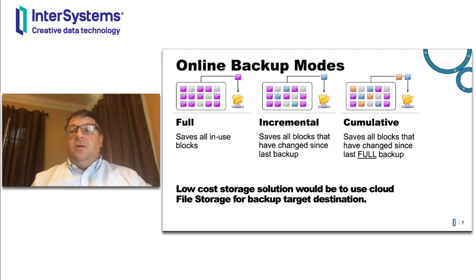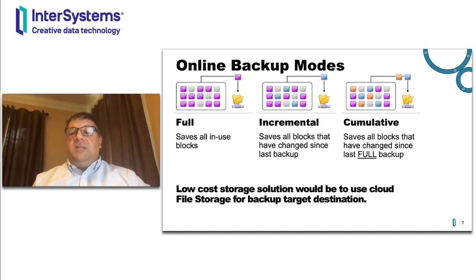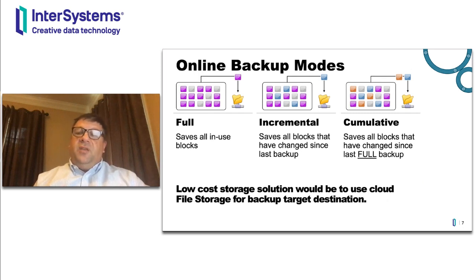Here we show examples of all three online backup methods. On the left, the purple boxes represent all in-use database blocks being saved to the backup file. In the middle, an incremental backup shows only the blue boxes representing only the blocks that have changed since the last backup. On the right, a cumulative backup shows both blue and orange boxes representing all blocks that have changed since the last full backup. All online backup methods include appropriate measures to support a clean backup with concurrent user activity, supporting true 24x7 operation without outage during the backup.